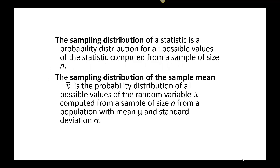The sampling distribution of a statistic is a probability distribution for all possible values of the statistic computed from a sample of size n. The sampling distribution of the sample mean X-bar is the probability distribution of all possible values of the random variable X-bar, which we compute from a sample of size n from a population with a mean of mu and a standard deviation of sigma.